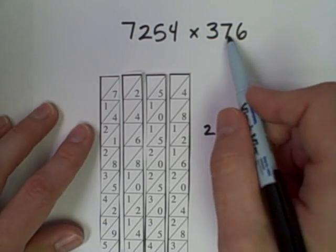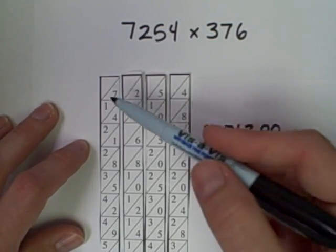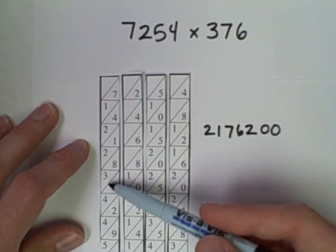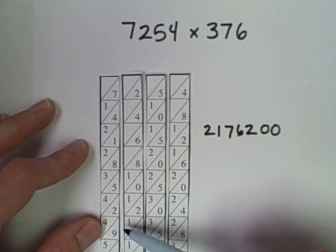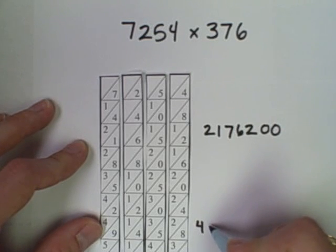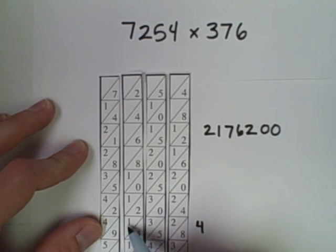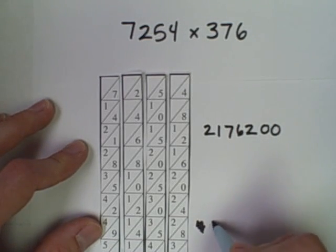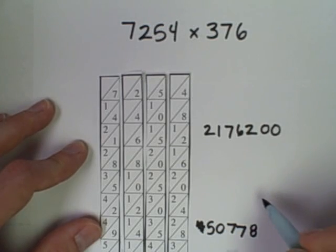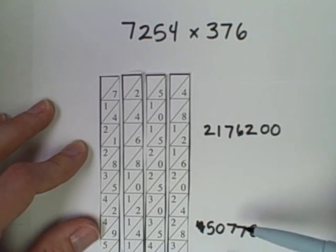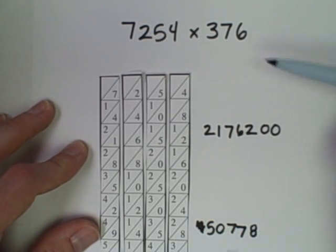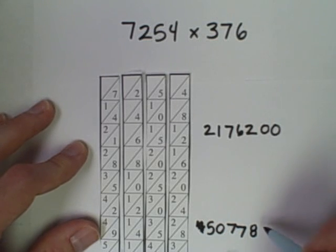To multiply by 70, I'm going to use the 7 row - 1, 2, 3, 4, 5, 6, 7. Here's the 7th row, and I get 4, and then I actually get 9 plus 1 is 10, so that makes that 5, 0, 7, 7, 8. This is 7,254 times 7. I really wanted it times 70, so I'll add a 0.